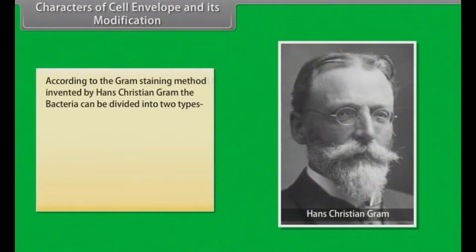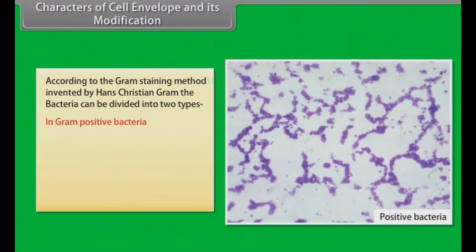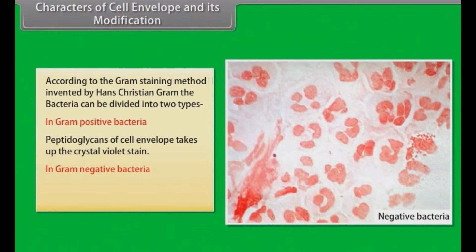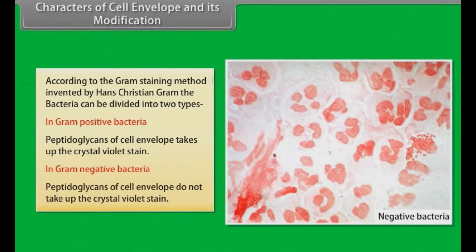According to the Gram staining method, invented by Hans Christian Gram, bacteria can be divided into two types. In Gram-positive bacteria, peptidoglycans of the cell envelope take up the crystal violet stain. In Gram-negative bacteria, peptidoglycans of the cell envelope do not take up the crystal violet stain.